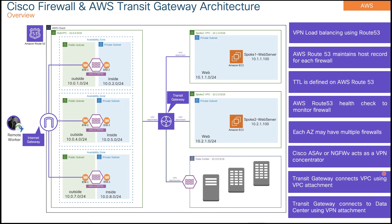Now look at this particular architecture — it is a pretty scalable hub-and-spoke model. We have a hub VPC using multiple availability zones — in this case three — and then spoke VPC one and spoke VPC two. These three VPCs are interconnected using a Transit Gateway with VPC attachments. I also have one connection going towards my firewall in the data center, and that part uses a VPN attachment.